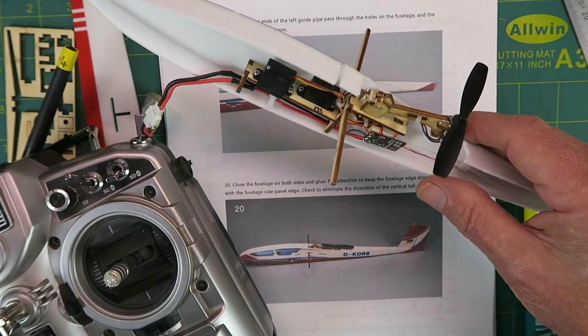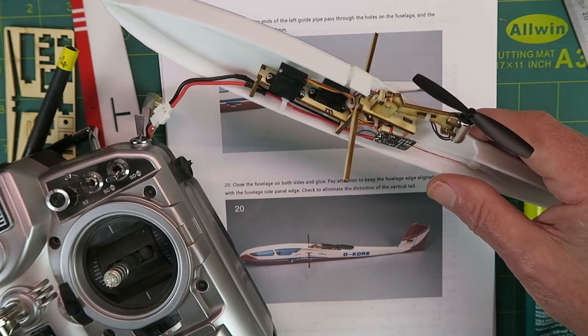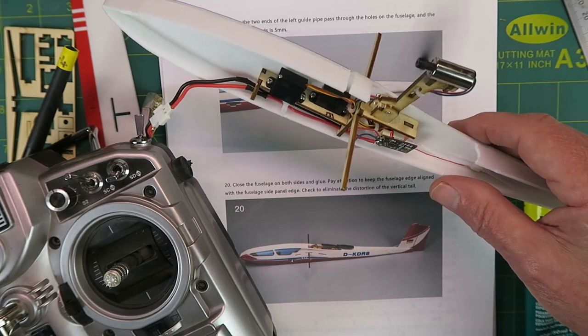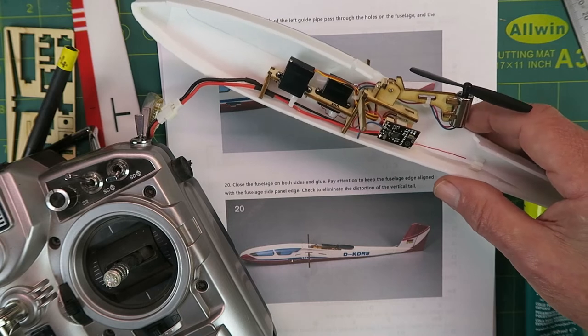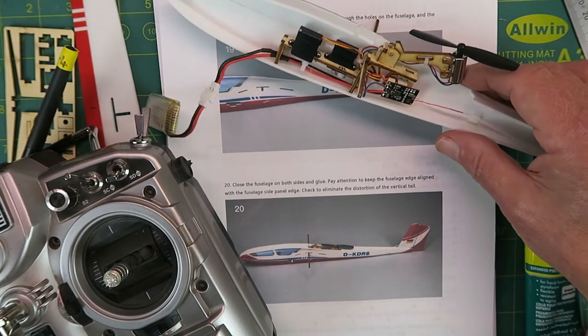So that falls back into place. That seems to have plenty of thrust then. I can now go ahead and glue the other side of the fuselage in place.